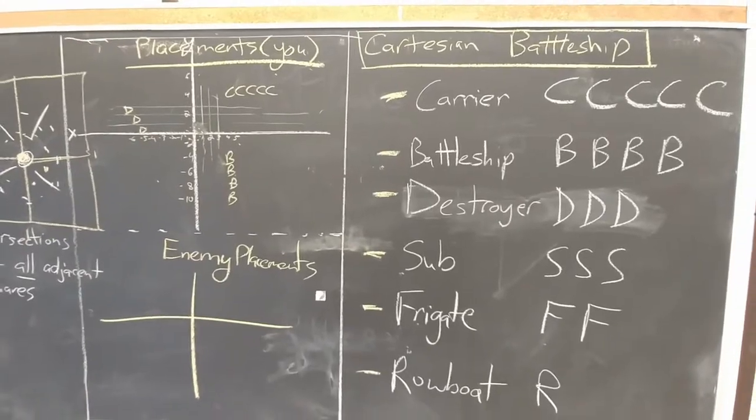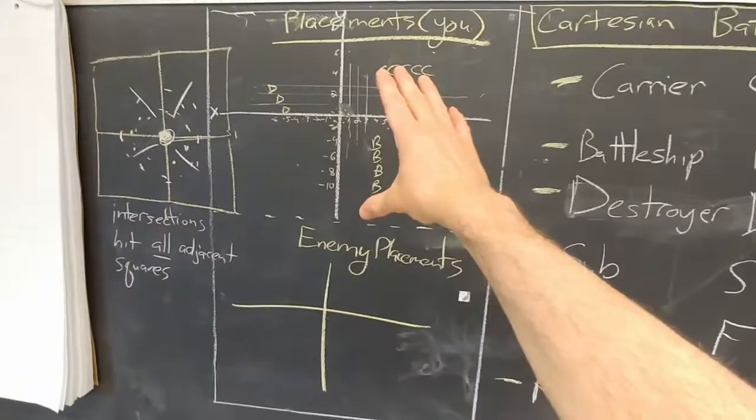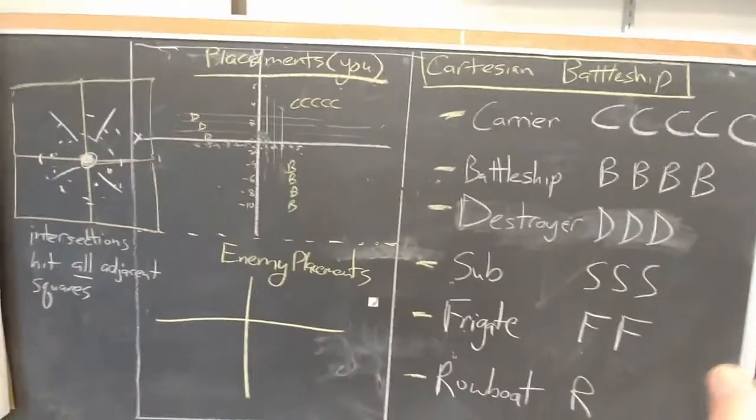Battleship works a little bit like this. You set up your page. Take your usual graph paper and you fold it in half. You set your grid up on the top, your enemy grid on the bottom. That's just like regular Battleship, but here's the catch.